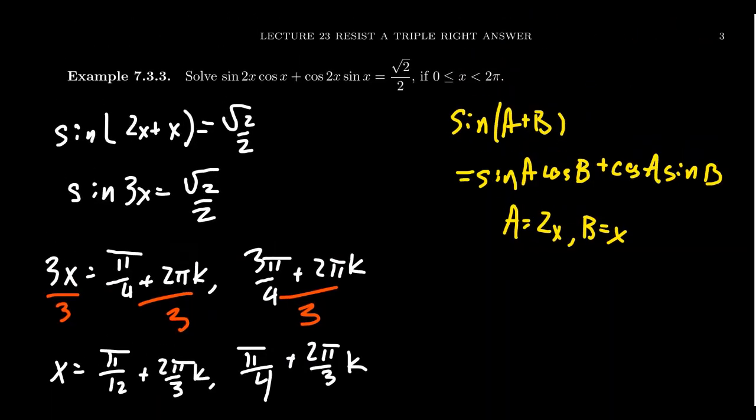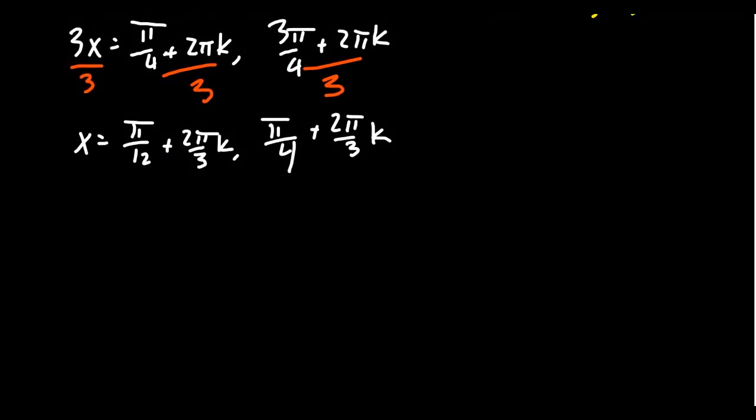Now, we're not quite done yet. This is the general solution, but we're asking for what's the solution between 0 and 2π. So we actually need to list each and every one of them out. Looking at the first general solution, you get π/12. You would also get π/12 plus 2π/3. You would also get π/12 plus 4π/3. Where did that 4π/3 come from? That came from 2 times 2π/3.